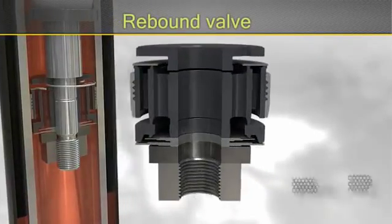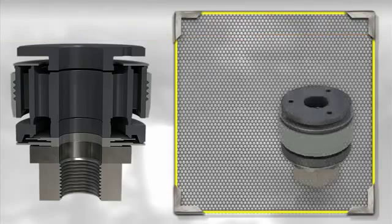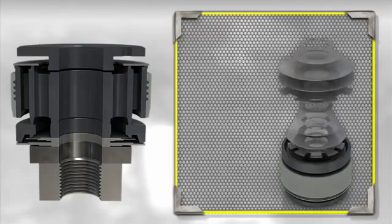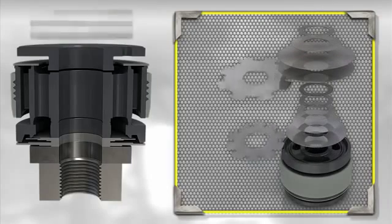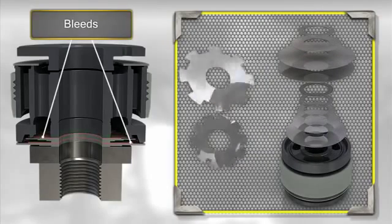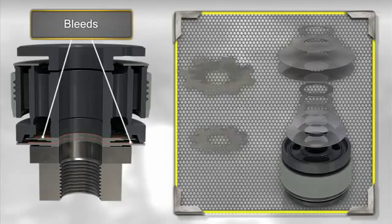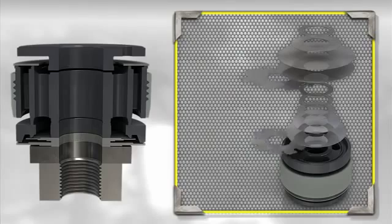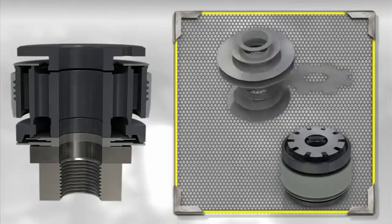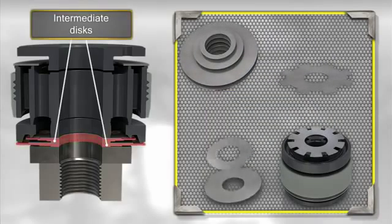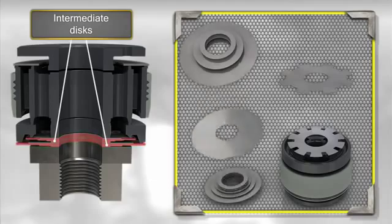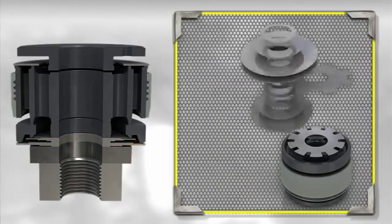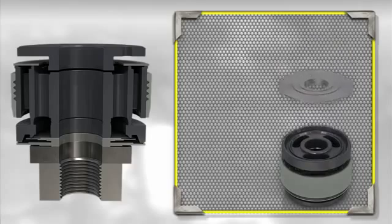This rebound valve comprises three types of basic elements that control oil flow. Flexible discs with the bleed perforations required to control force at low piston speed, 0.12 meters per second. The set of flexible discs necessary to control force at medium speed, 0.42 meters per second. And a perforated central cylinder or interface, which manages the force when the rod moves at high speed, 0.76 meters per second.